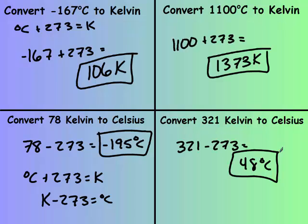You should have gotten negative 195 because Kelvin minus 273 will equal degrees Celsius. Here we're converting Celsius to Kelvin, so you get 1373 Kelvin. And 321 minus 273 is 48 degrees Celsius. Make sure you put units on your answers.